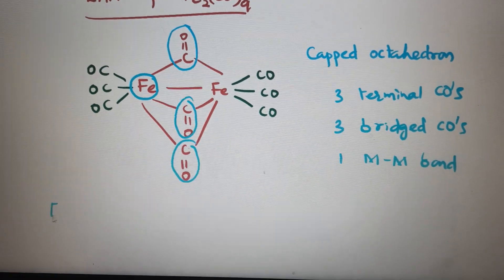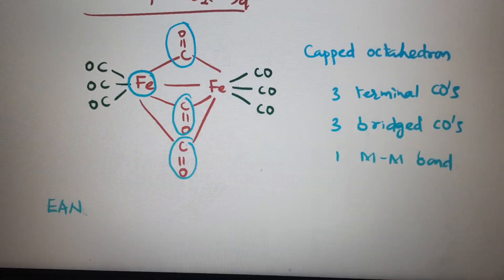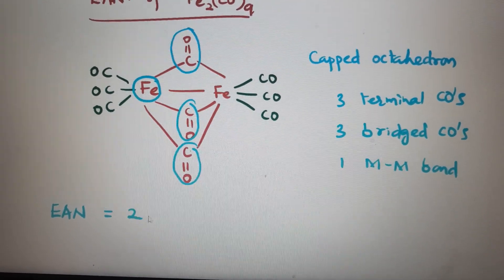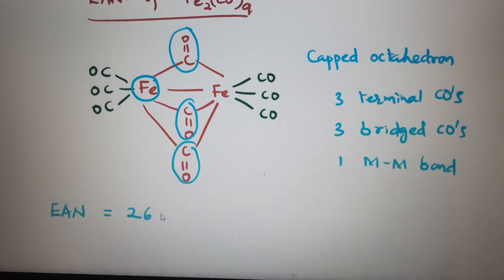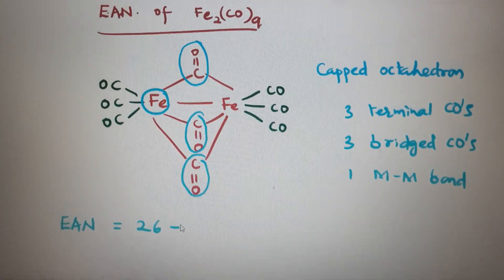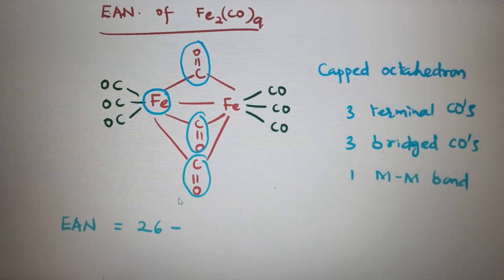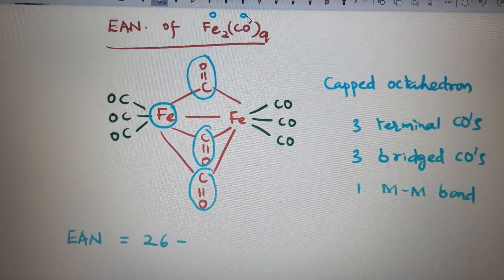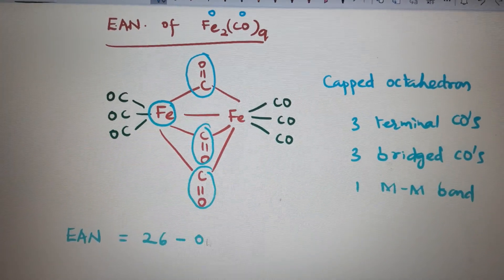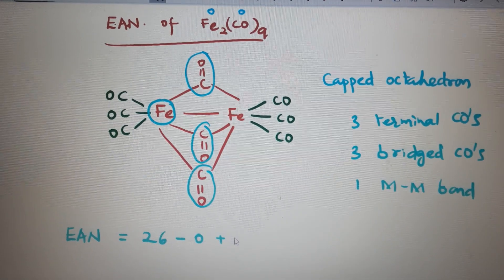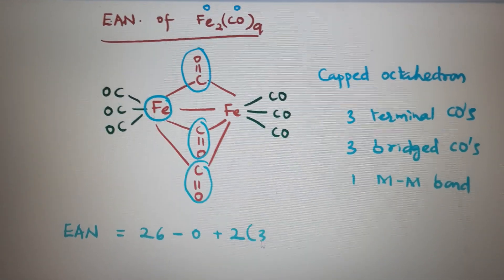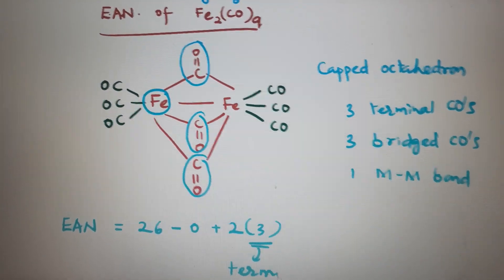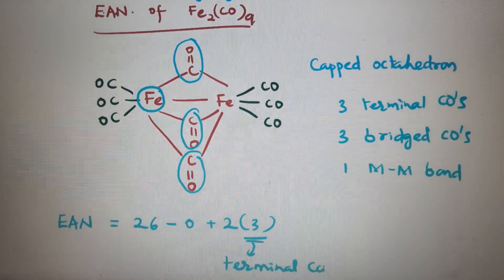Then EAN for iron in this complex: atomic number 26 minus oxidation state here zero, being neutral ligands are there. Zero plus two into three, which are terminal COs.